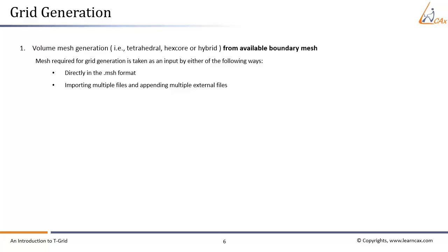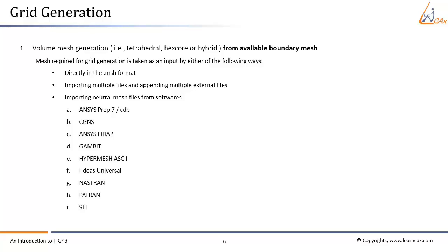For example, if you are creating a hybrid mesh by reading in a triangular boundary mesh and a volume mesh consisting of hexahedral cells, read both files at the same time. The neutral mesh files from software like Nastran, Patran, HyperMesh, ASCII, and STL can be imported in T-Grid in their respective output file formats.